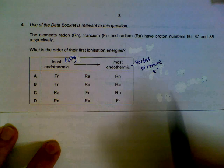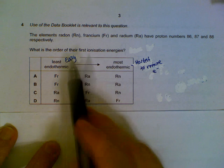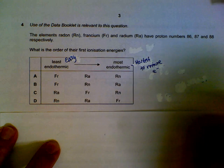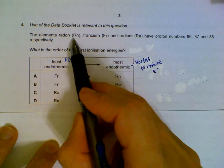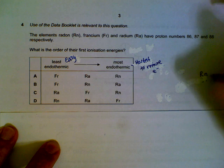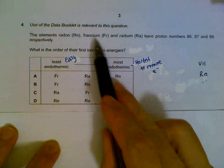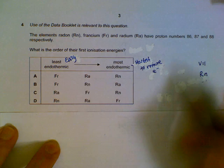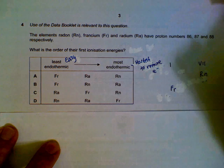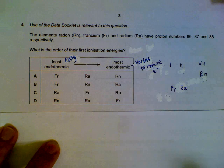The hardest to remove means the electron is held more tightly to the atom itself. We are comparing Radon, Francium, and Radium. You need the periodic table: Radon is in group 18, Francium is in group 1 but one period below Radon, and Radium is in group 2 next to Francium.